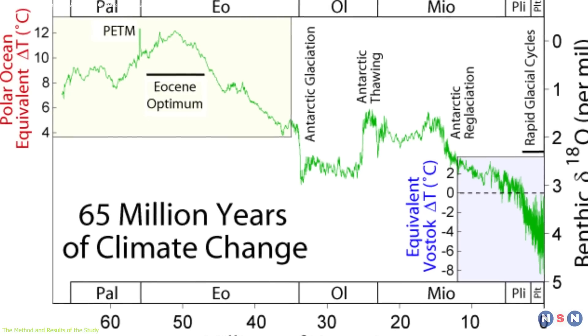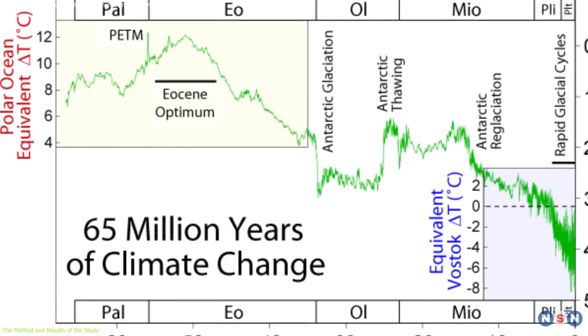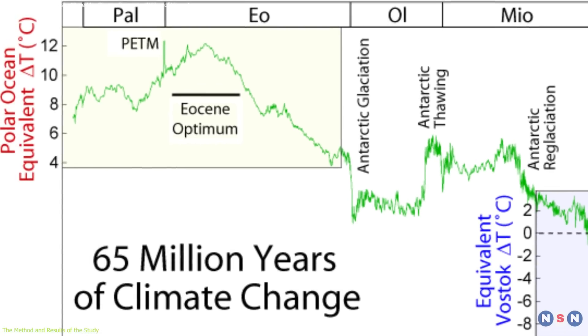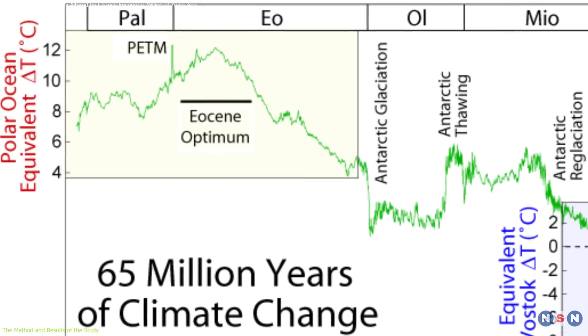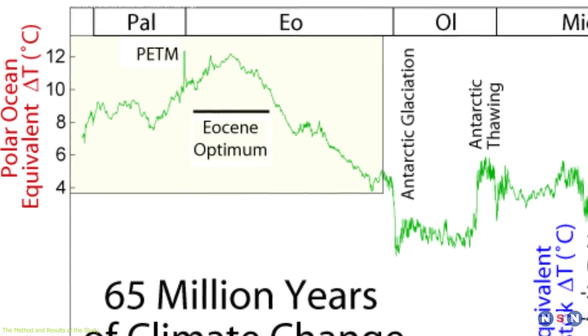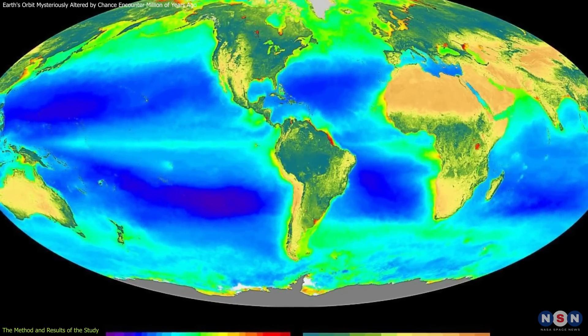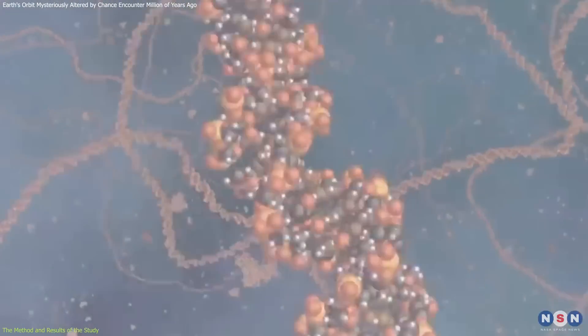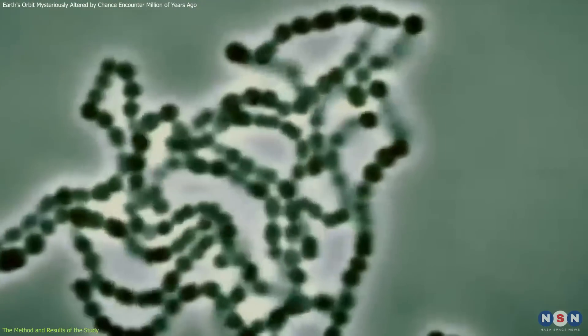The PETM was a time when Earth's temperature rose by up to 8 degrees Celsius, or 14.4 degrees Fahrenheit, in just a few million years, around 56 million years ago. This was a dramatic change that had profound impacts on the biosphere, such as the emergence of new species and the extinction of others.